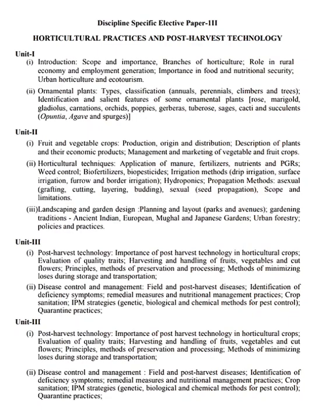Please write these questions down carefully. Next: cut flowers. Next: principles and methods of preservation of fruits and vegetables. Next: evaluation of quality traits in fruits and vegetables. Next: crop sanitation. Next: quarantine practices. Next: germplasm conservation. Next: documentation. Next: grafting. Next: PGR. Next: urban horticulture. And last: seed propagation.